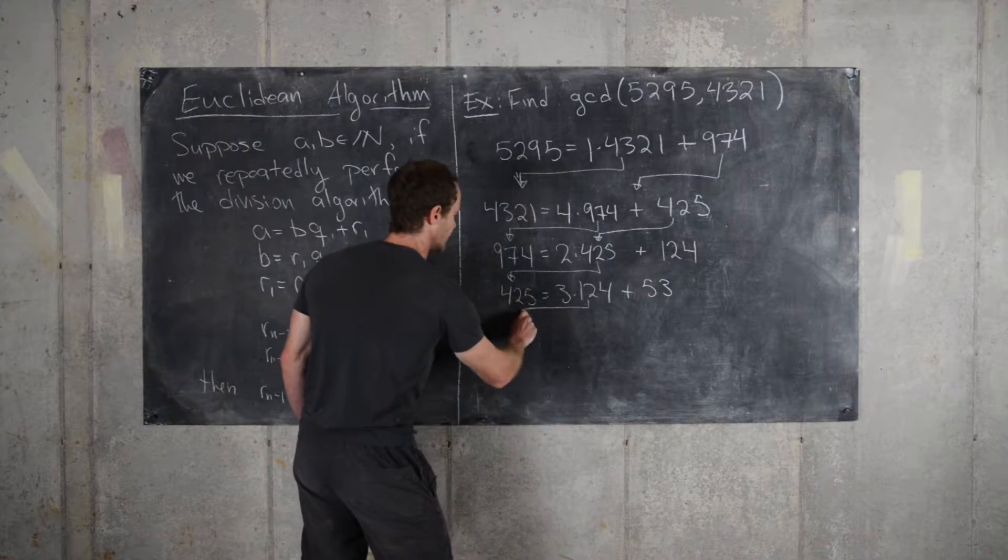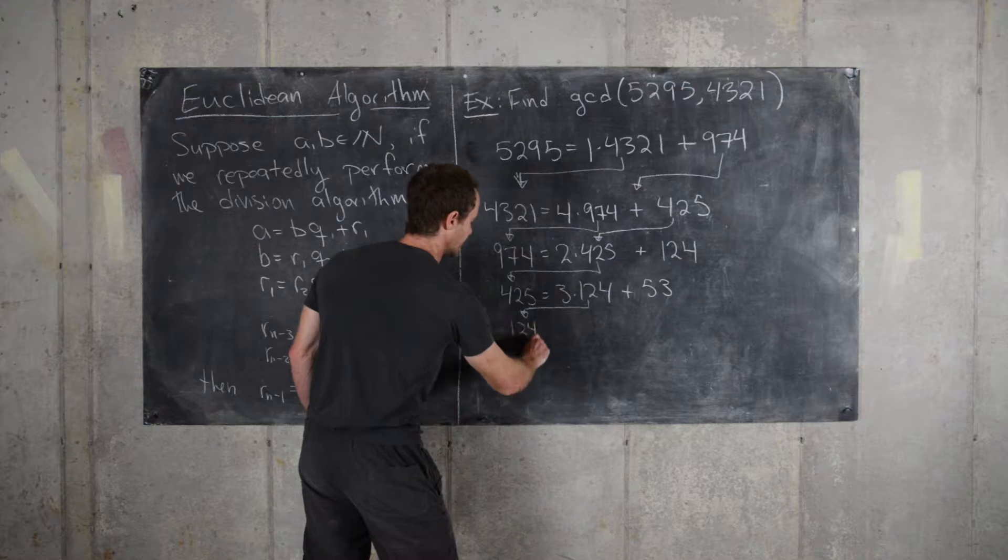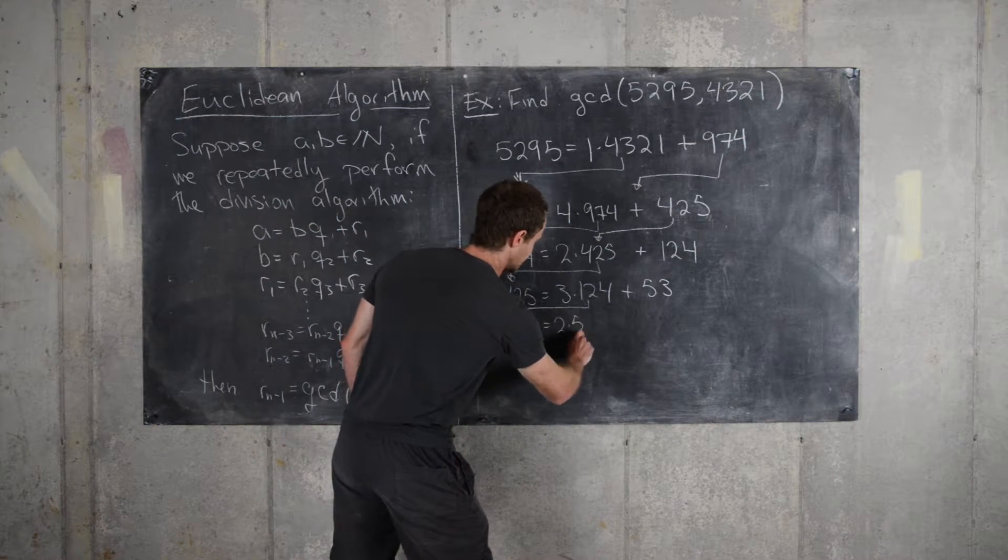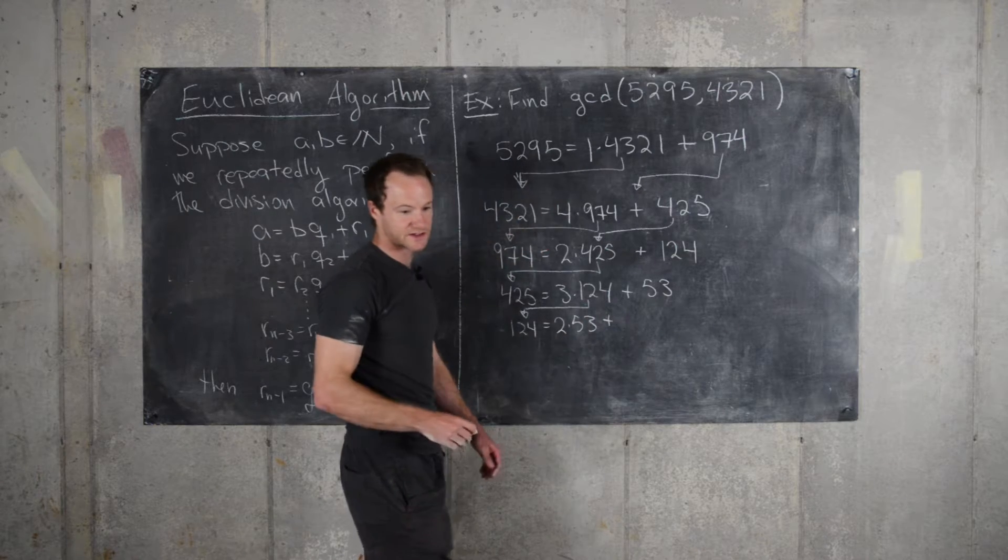And then we can move 124 down. 124 is equal to 2 times 53 plus 18.